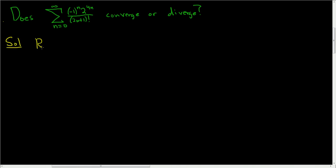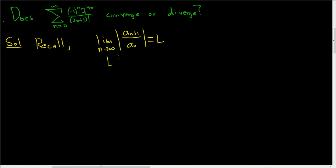Recall the ratio test: if you take the limit as n approaches infinity of the absolute value of a_sub_(n+1) divided by a_sub_n, and you get L, then one of three things happens. If L is less than 1, then the series converges — it actually converges absolutely, but I'll just write converges since that's all we need for this problem.